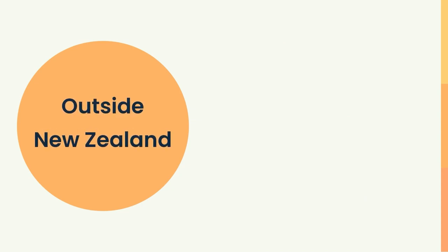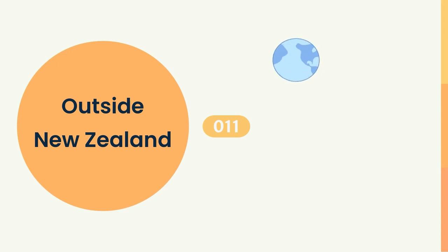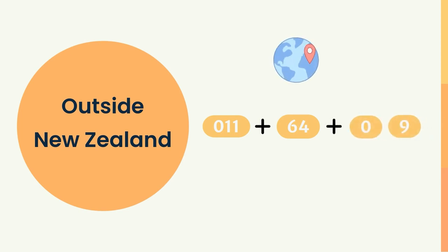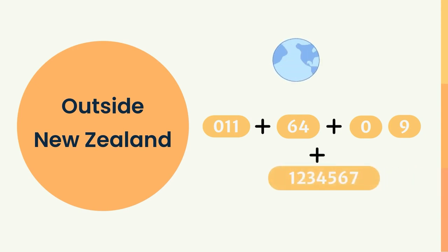From outside New Zealand, start with the international access code of your country — for example, 011 in the United States. Then dial the New Zealand country code, which is +64. Enter the specific area code for the region you are calling, including the leading 0 after the country code. Finally, dial the local number, typically 6 to 7 digits long.